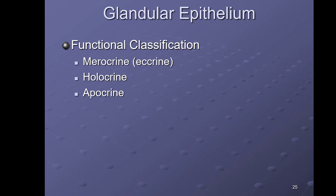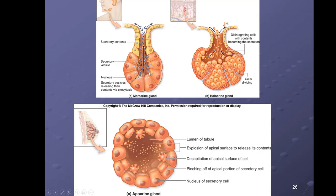Functionally we can classify exocrine glands by how they secrete their substance: merocrine (also known as eccrine), holocrine, and apocrine. Merocrine glands secrete their substance via exocytosis — that's the key word. Merocrine or eccrine glands secrete substances via exocytosis, and a great example is your sweat glands.